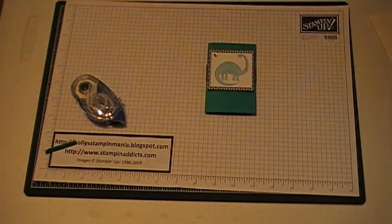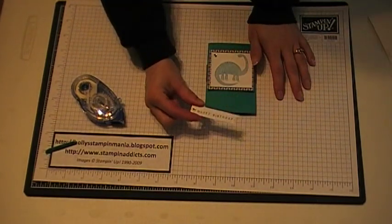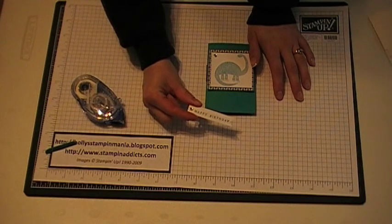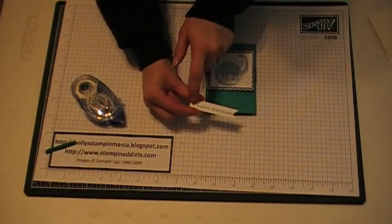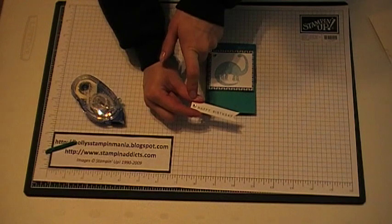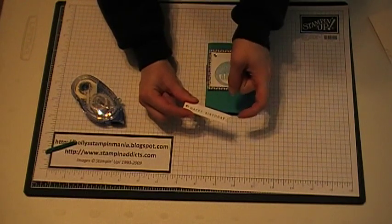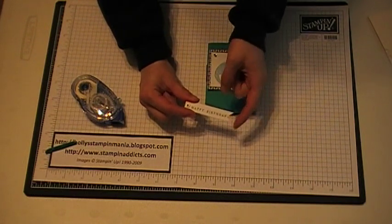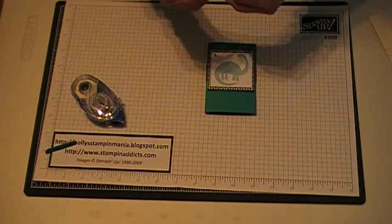And then I stamped Happy Birthday on a piece of Whisper White Paper from our little birthday cheer set in taken with teal. I set a silver eyelet on the side over here, and then I cut out the end to make a little banner tag.